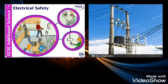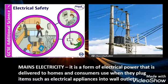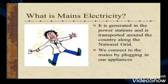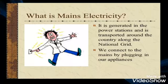At home, we have mains electricity. Mains electricity is a form of electrical power that is delivered to homes and consumers when they plug items such as electrical appliances into wall outlets. Mains electricity uses a much higher voltage — about over 100 volts. The exact voltage depends on your country. It is generated in power stations and is transported around the country along the national grid. We connect to the mains by plugging in our appliances.